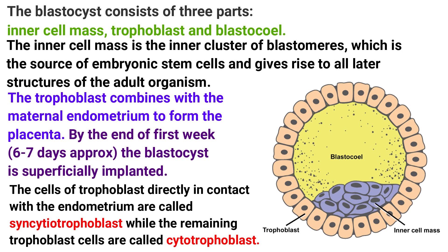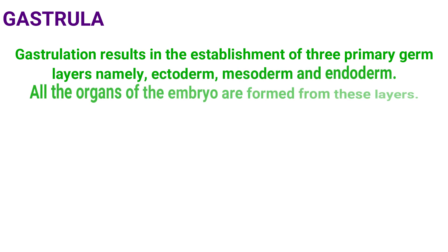The next heading is gastrula. Gastrulation results in the establishment of three primary germ layers, namely ectoderm, mesoderm, and endoderm. In the blastocyst, the inner cell mass is present, and it is this inner cell mass that will form the entire organism. In gastrulation, the inner cell mass divides into three separate layers — ectoderm, mesoderm, and endoderm — and all the organs of the embryo are formed from these layers.